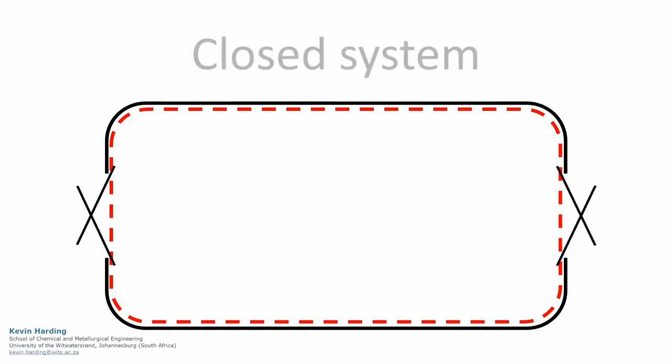A closed system does not allow material to flow into or out of the system. Batch processes are the most common form of a closed system as no material enters or leaves. The constant mass example from before was also a closed system, as the system changed to ensure material was kept inside the boundary.